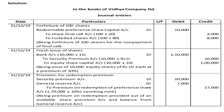Journal Entry 2 — fresh issue of shares: Bank account debited 10,000 × 11 = 1,10,000 rupees; to Equity Share Capital account 10,000 × 10 = 1,00,000 rupees; to Securities Premium account 10,000 × 1 = 10,000 rupees. Total 1,10,000 rupees. Being issue of 10,000 equity shares of rupees 10 each at a premium of 10%.